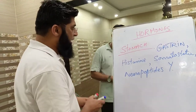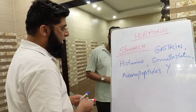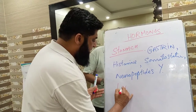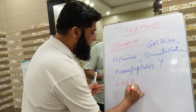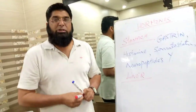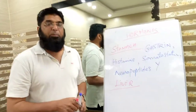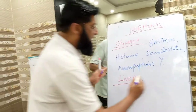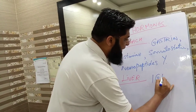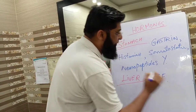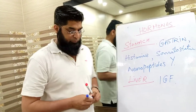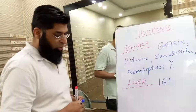Now we move to the next target organ: the Liver. The liver produces IGF — Insulin-Like Growth Factor.